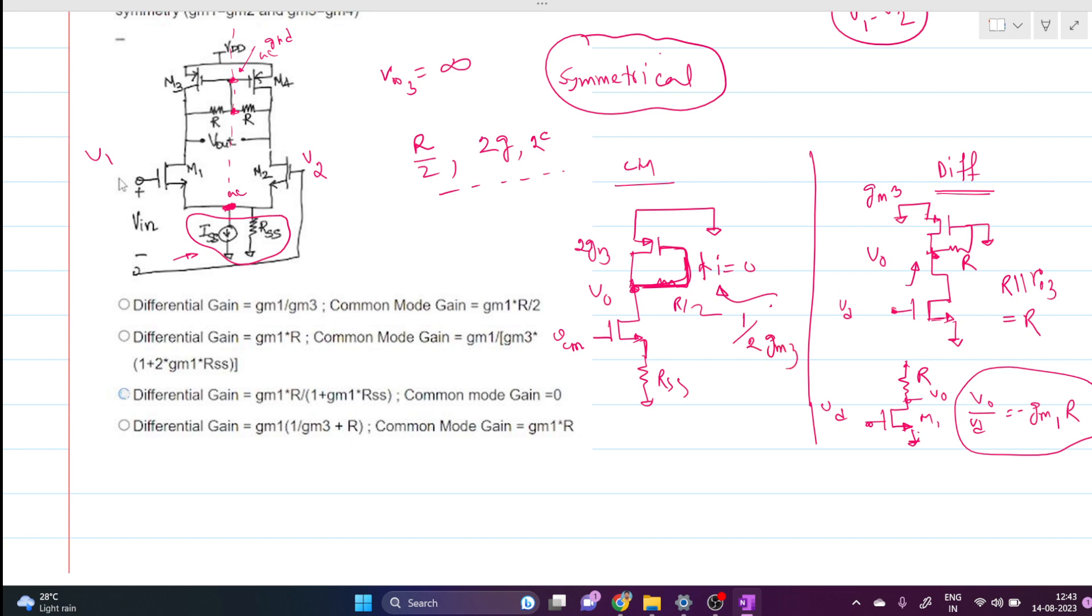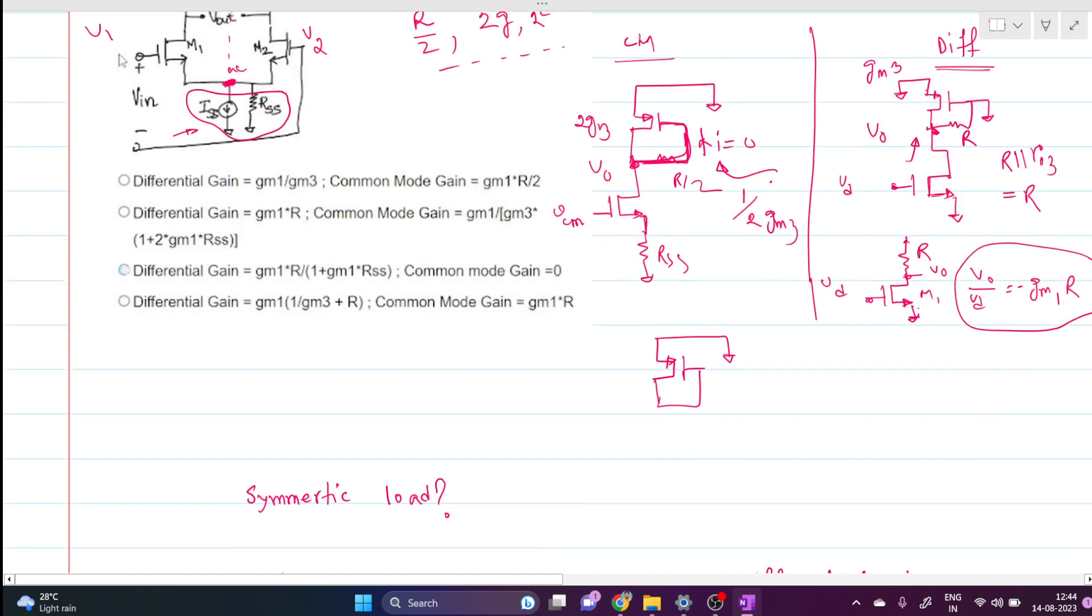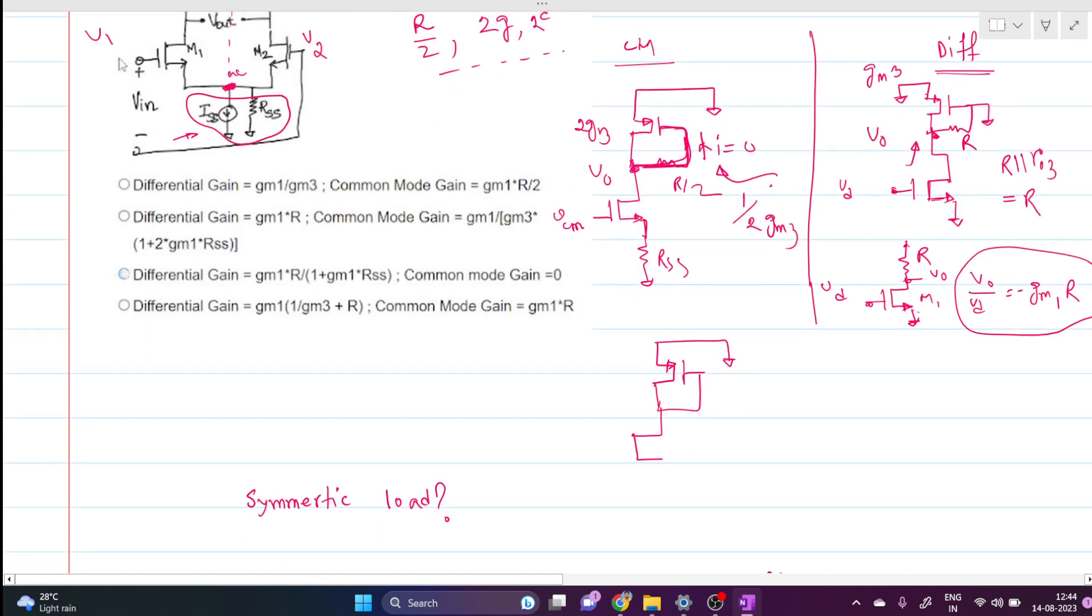This is nothing but a diode-connected load. If we redraw the circuit again, this is our AC small signal ground, this is our diode-connected load, and this is our MOSFET M1. Resistance looking up here is 1 over 2gm3, and there is Vcm common mode input signal, and this is Rss.